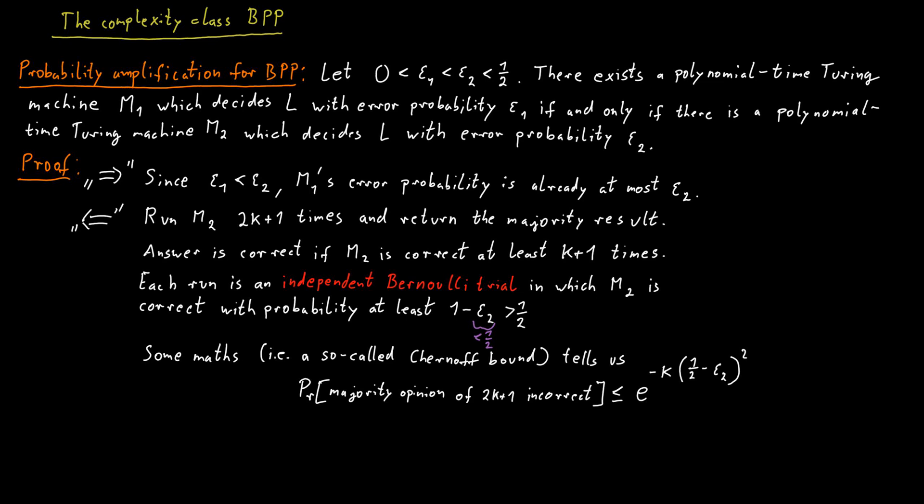And we need this error probability to be at most epsilon 1. So the question is how big do we have to choose k to make this happen, where k influences how many runs we make. And remember we run M2 2k plus 1 many times.